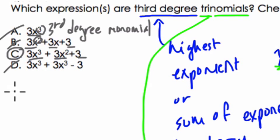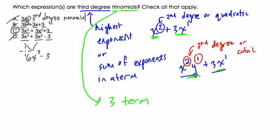And D also looks like a third-degree trinomial: 3x³ + 3x³ - 3. Well, here, 3x³ + 3x³ can be simplified. It's 6x³ - 3. Always simplify first, then count your terms. This is a third-degree binomial—third-degree, two terms. That's not what we need. We need a trinomial, so the answer is C. Hope that helped. Thank you.